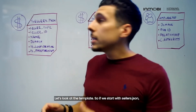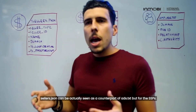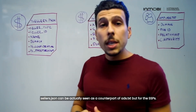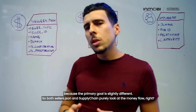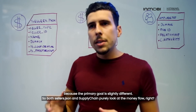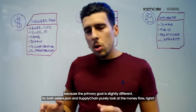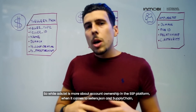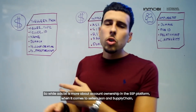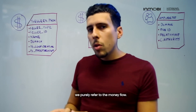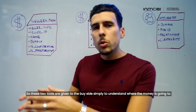Let's look at their template. Starting with sellers.json: sellers.json can be seen as a counterpart of ads.txt, but for SSPs. I don't want to trivialize it as just a counterpart because the primary goal is slightly different. Both sellers.json and supply chain object purely look at the money flow. While ads.txt is more about account ownership on the SSP platform, sellers.json and supply chain refer purely to the money flow — tools given to the buy side to understand where their money is going.